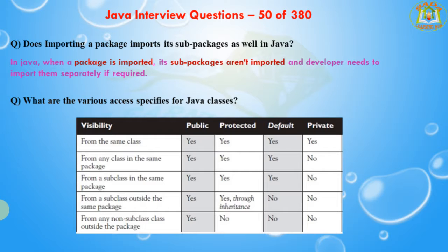In Java, access specifiers are keywords used before a class name that define the access scope. Public can be used at class level, method level, and field level, and is accessible anywhere. Protected methods and fields can be accessed from the same class, from subclasses, or from classes in the same package, but not from outside. Default methods, fields, and classes can be accessed only from the same package. Private methods and fields can be accessed only from the same class to which they belong.